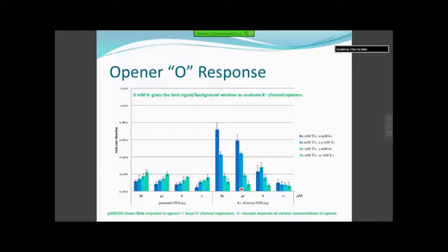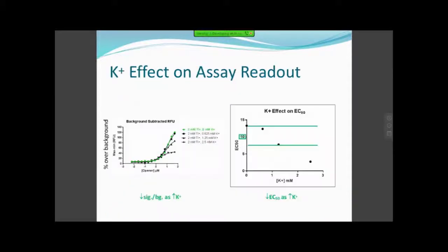On the other hand, the potassium channels that are expressed in this cell line respond to the various concentrations of opener. Further investigating the potassium effect on the assay readouts showed that as you increase potassium from 0 to 2.5 millimolar, your signal to background actually decreases. When you look at the EC50s, you notice that as you increase the potassium, you actually decrease the EC50 value, thus increasing the potency. From literature and from our own experiments in manual patch clamp, we knew that this compound had an EC50 roughly around 10 micromolar. Certainly with these three conditions here, we were within the range of expectation.